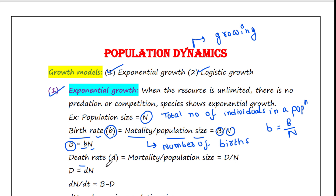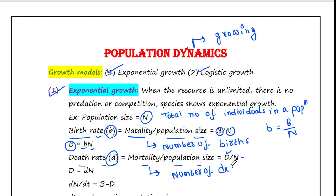Death rate: we denote mortality by capital D and population size by capital N. Mortality is the number of deaths. The link to the last lecture is in the description box if you want to review it. Small d equals capital D divided by capital N, so capital D equals small d times capital N. Again, this is simple mathematics.